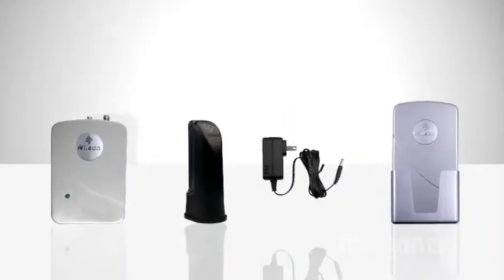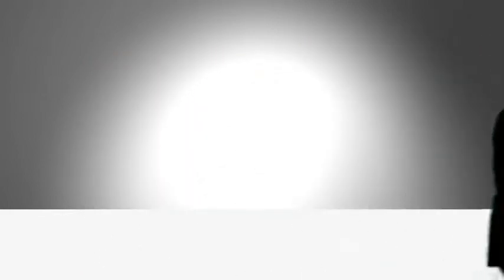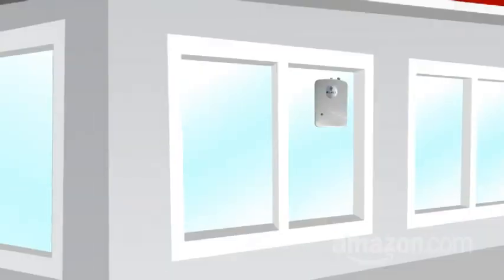Once you've purchased the proper kit, walk around your house or apartment with a phone in your hand to find the area with the strongest reception. Then, mount the kit's antenna in that area, ideally high up, like in an attic or outside an upstairs window.